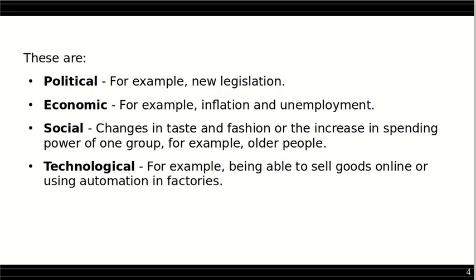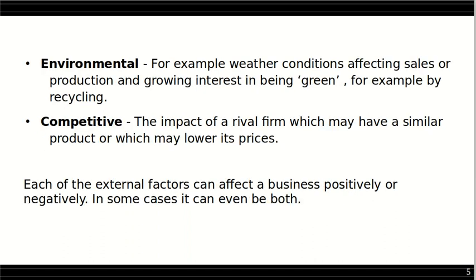These are political, like new legislations; economic, like inflation and unemployment; social, such as changes in taste and fashion or the increase in spending power of one group, for example older people; technological, for example being able to sell goods online or using automation in factories; environmental, for example weather conditions affecting sales or production and growing interest in being green, such as recycling; and competitive, the impact of a rival firm which may have a similar product or which may lower its prices. Each of the external factors can affect a business positively or negatively, and in some cases it can even be both.